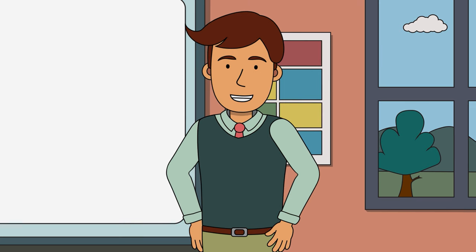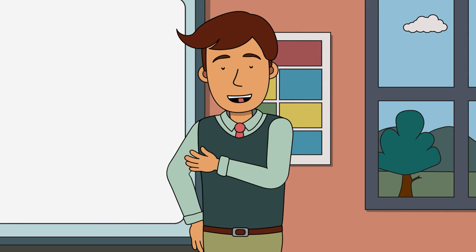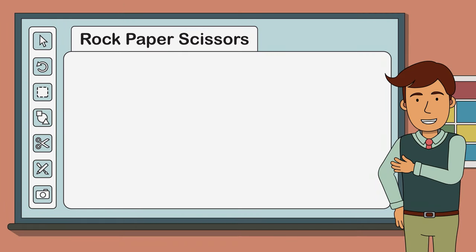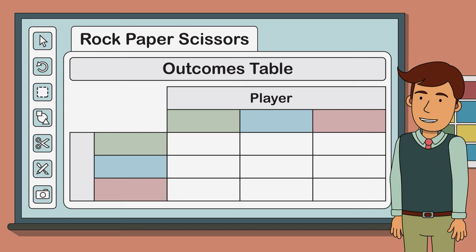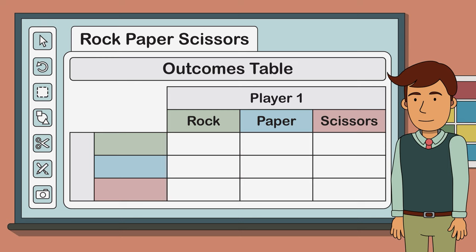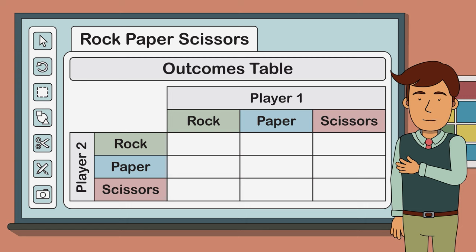But have you ever wondered about the mathematics behind this simple game? You might find this hard to believe, but there are actually nine possible outcomes for any game of rock, paper, scissors. We can see this by creating an outcomes table. The top of our table represents player one and the three possible choices that they might make, and the left-hand side represents player two and the three choices that they might make. The nine squares in between represent the nine possible outcomes of any game.